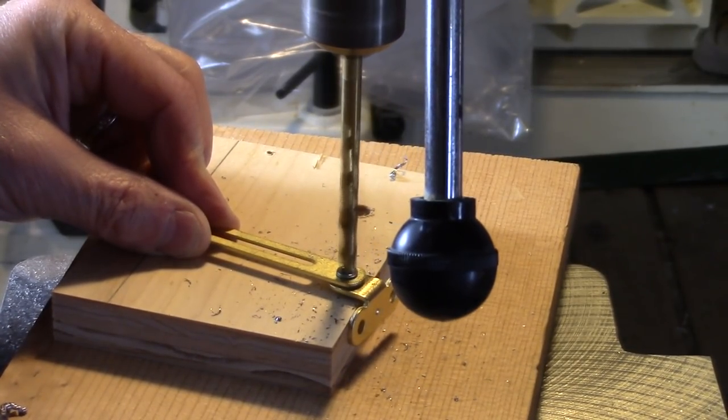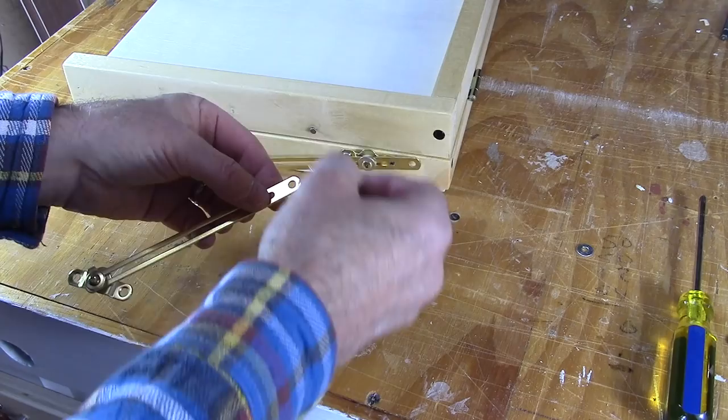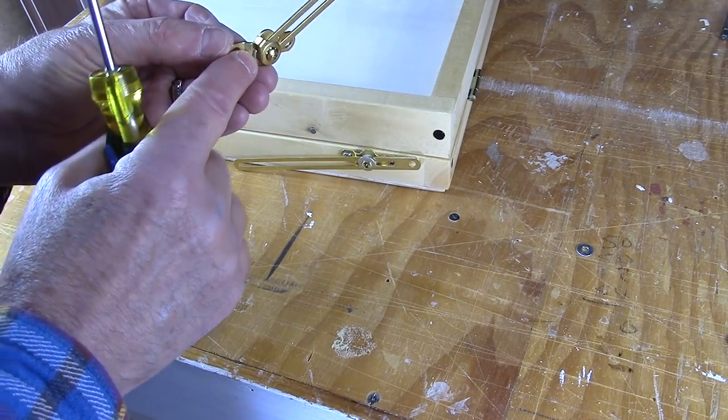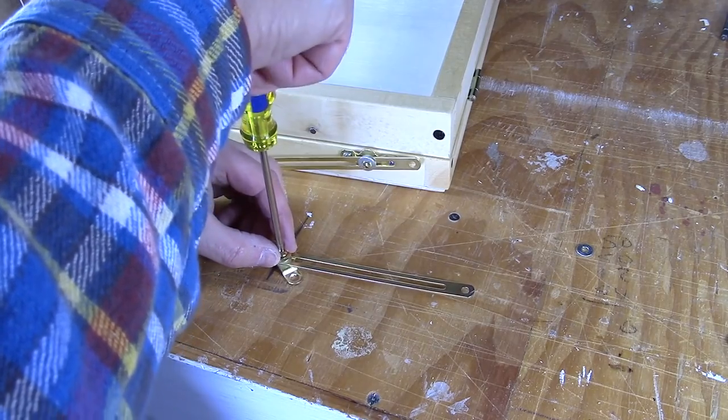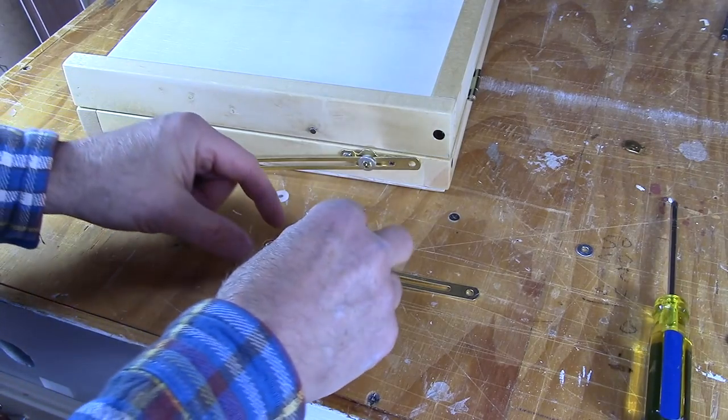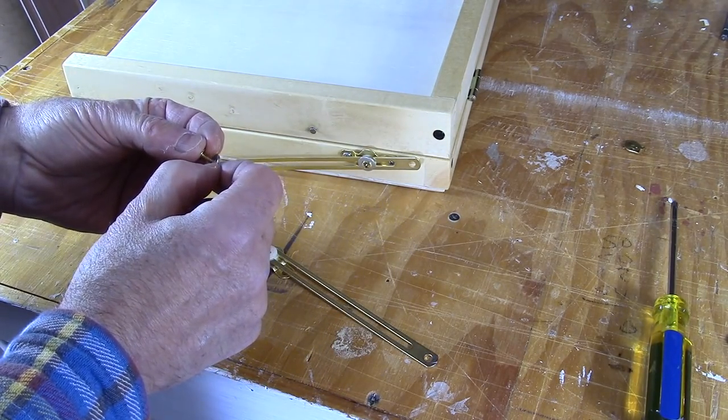I don't need this angle part of the support, so by drilling out the rivet that holds it in place, I can remove it and discard it. I also don't need that metal cover of the friction arm. This has a little lip that will get in the way, so I can replace that with just a regular small washer.